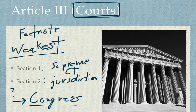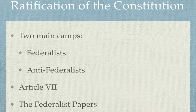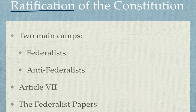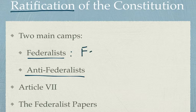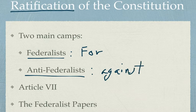This is the document that came out of the Constitutional Convention, but it doesn't automatically go into effect — it has to get ratified, meaning it has to get passed and become the usable Constitution of the United States. And it's not really a foregone conclusion. Pretty quickly, two main groups emerge around this Constitution: the Federalists, who were for the Constitution, and the Anti-Federalists, who were against it. They have a huge battle.